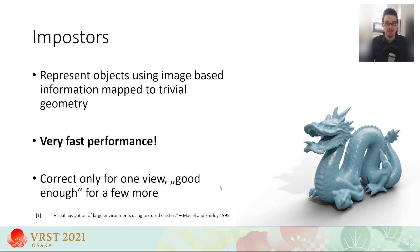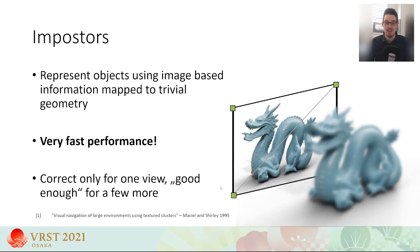A common approach for optimizing rendering performance is to employ various mesh simplification techniques. One extreme form of simplification are impostors. In its most common form, an impostor replaces the original 3D object with a rendered image of itself. Due to its simple geometry and pre-calculated radiance values, an impostor can be rendered much faster than the original object. Although impostors are only valid for a small viewing region, they are still a popular choice in non-XR applications to replace distant or contextual objects.